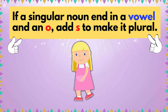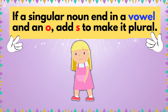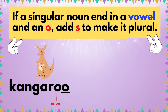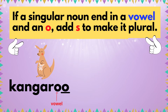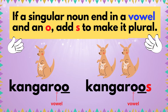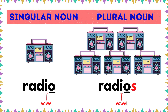Rule number three: if a singular noun ends in a vowel and an O, add S to make it plural. Take a look at the examples. This is a kangaroo — the word kangaroo ends in a vowel and an O, so kangaroo becomes kangaroos. Here's the word radio — it ends in a vowel, the letter I, and letter O, so the plural form will be radios.